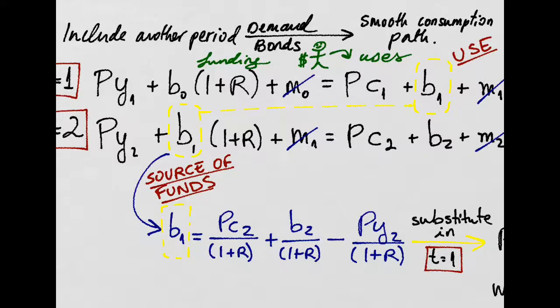So now we include another period and we'll show how people demand bonds to have a smooth consumption path.